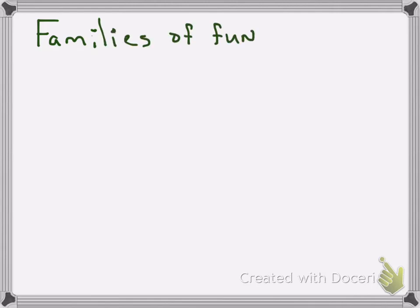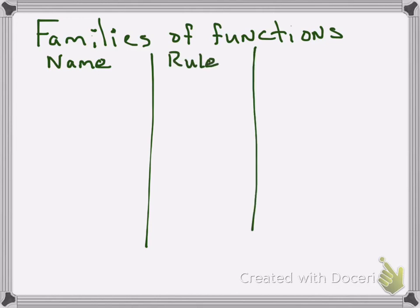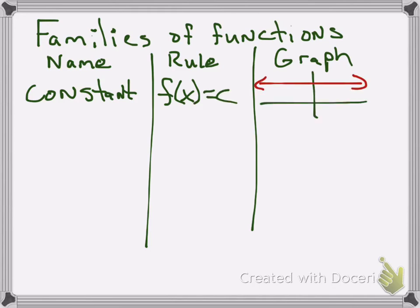All right, so what are our different types of families? These are going to be all the functions we're going to study at some point this year. A constant function is just f of x equals a number, and it's a horizontal line. So wherever that horizontal... Like if it's f of x equals 3, it's a horizontal line through 3 on the y. And notice that they will always be horizontal lines.